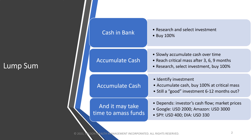There are probably three general approaches if you lump sum invest. In scenario one you have the cash already sitting in your bank account — maybe you've inherited money, maybe you're wealthy. So you do your research, select an investment, and on day one you buy 100%. In that scenario, over the longer term, lump sum investing will outperform dollar cost averaging.